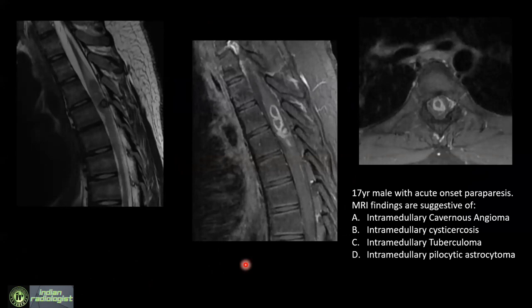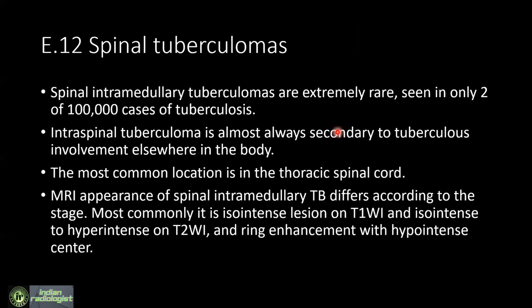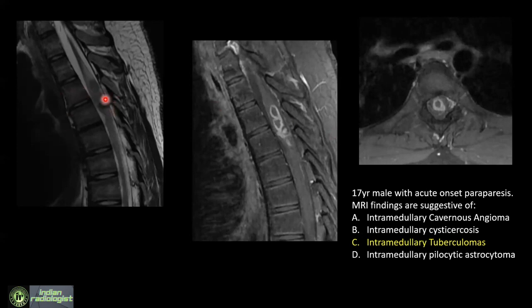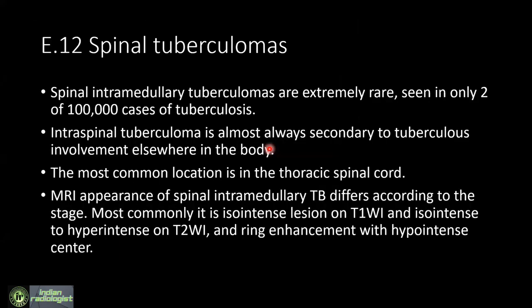The next question shows sagittal T2, sagittal T1 post-contrast, and axial post-contrast images. These findings are commonly seen in the brain but rare in the cord. 50% identified them correctly as intramedullary tuberculomas. These are typical T2 hypointense lesions which are peripherally enhancing with perilesional edema and conglomerate appearance. Spinal intramedullary tuberculomas are rare and usually secondary to tubercular involvement elsewhere; this patient also had multiple tuberculomas in the brain and pulmonary involvement.